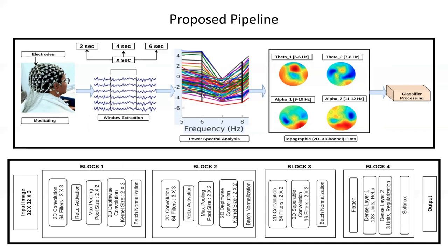Window extraction is followed by power spectral analysis. Oscillatory cortical activity related to meditation primarily involves two frequency bands: theta and alpha. We test our model on the meditation dataset, which is why we extracted theta and alpha. These bands are further subdivided into theta 1, theta 2, and alpha 1, alpha 2. We created topographic maps of scaled data in a 2D circular view, and these images are fed into our classifier.